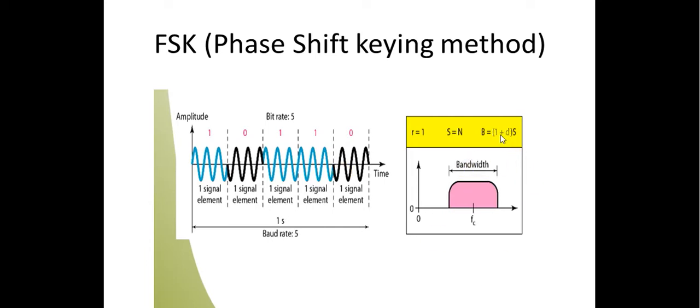This is the bandwidth, and for the bandwidth it will be the same as before. We have done amplitude shift keying method. B is equal to 1 plus D into S.